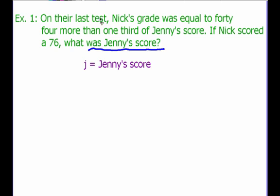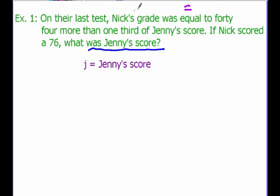Now we need to write an equation to model this. It says Nick's grade was equal — we're going to have an equal sign — to 44 more than, which tells us we're adding, one-third — that's multiplying by a third — of Jenny's score, which we said was J. And we know Nick's score was 76.